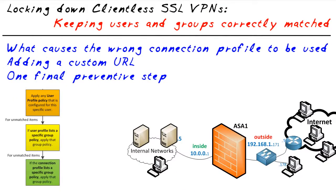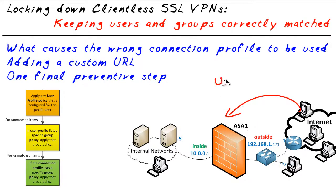In this micro nugget we're going to take a look at solving the problem of having users that connect and get into the wrong connection profile. They have the wrong policy assigned to them — it happens all the time. When a user connects, the ASA is going to associate that user with a connection profile based on the URL that they connected to, or possibly giving a drop-down menu to the user.